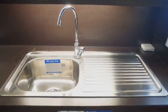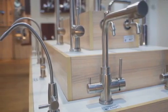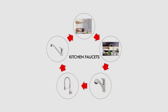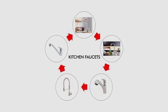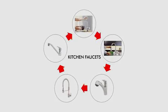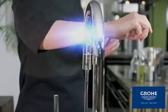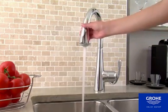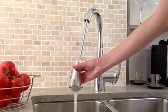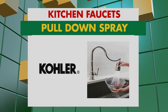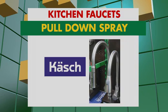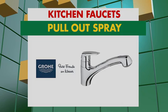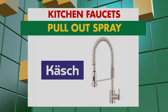Ang kitchen sink faucets na available sa Wilcon ay maraming design, features, at functions, at karamihan dito ay pang isang butas lang. Ang kitchen sink faucets ay may iba't ibang paraan ng pagkontrol: touch kitchen faucets, available sa Grohe brand; pull-down spray kitchen faucets, available sa Grohe, Kohler, Franke, at Cash brand; at pull-out spray kitchen faucets, available din sa Grohe, Kohler, Franke, at Cash brand.